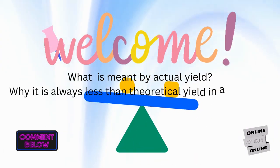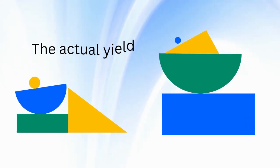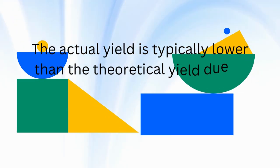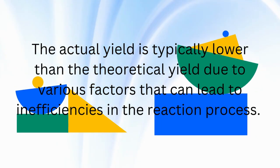What is meant by actual yield? Why is it always less than theoretical yield in a reaction? The actual yield is typically lower than the theoretical yield due to various factors that can lead to inefficiencies in the reaction process.